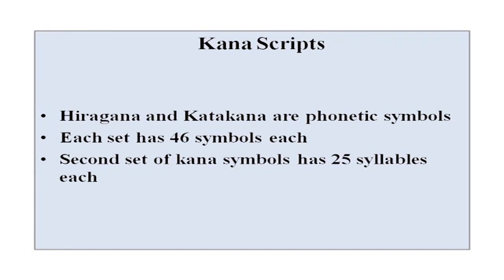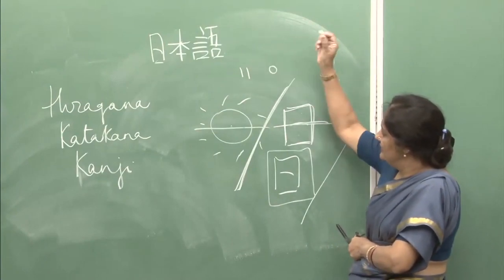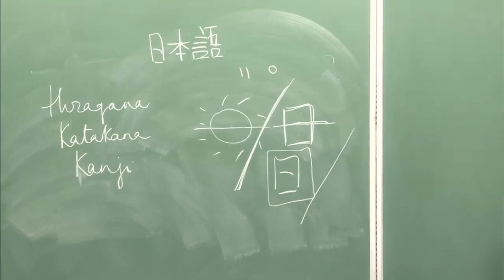Now let us see what hiragana and katakana are. The kana scripts are phonetic scripts — they are phonetic symbols. Whatever you say, you write. Hiragana has 46 basic symbols, and so does katakana — also 46 basic symbols. There is a second set for both scripts as well. The second set has 25 characters each, and interestingly, the second set is made from the first set by using just two additional symbols.